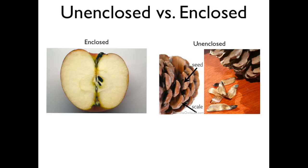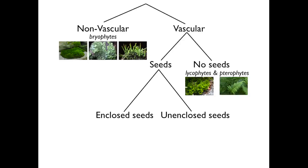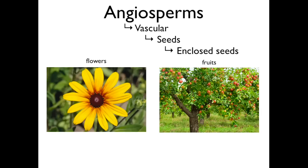Unenclosed seeds, like those of a pine cone, are not enclosed within an ovary and are open to the air. Plants with vascular tissue and enclosed seeds are known as angiosperms. As a general rule, think of angiosperms as plants with flowers or fruits.